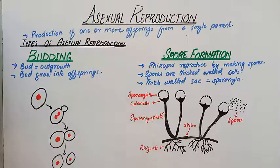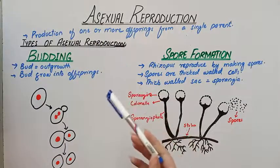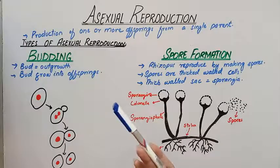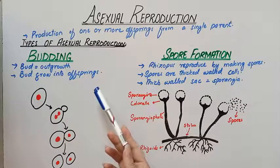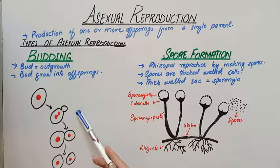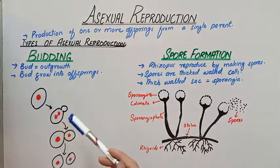Today we are studying budding and spore formation. So what is a bud? A bud is an outgrowth that arises from a parent body. It continues to grow and develop into offspring.